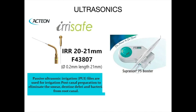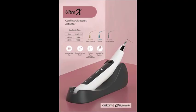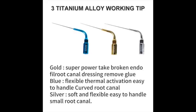Then comes ultrasonics. One of the most popular ones is the Irrisafe tip from Satelec, and another example is the Ultra X. All these devices have metallic tips, and we know there can be problems placing metallic tips inside root canals. Among the stiffer tips, in one of our last videos I mentioned it's not a good idea to buy the Ultra X device because their tips are very stiff — but the company has now modified them with more soft and flexible tips. They are still metallic, but since they are made of titanium they may not ledge or break easily.